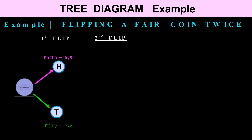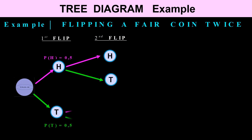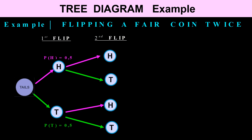Now for the second flip — if I have heads, the next flip could be heads again or a tail. And the same with tails: it can be heads or tails. The probability again of heads is 0.5 and tails is 0.5.